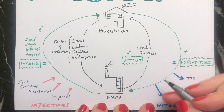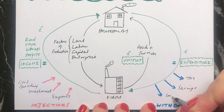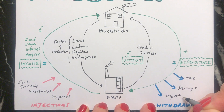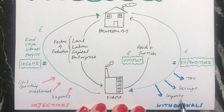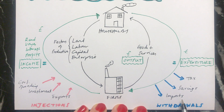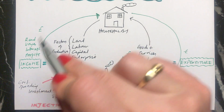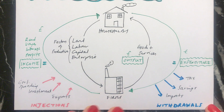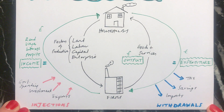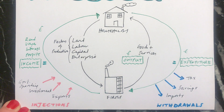The third type of withdrawal is, again, slightly counterintuitive: imports. If our economy imports something from another country, then we give them money for that product and therefore money leaves our economy, so less money is flowing round the circular flow of income. The main things to remember from this video are that we have three injections and three withdrawals that can occur.